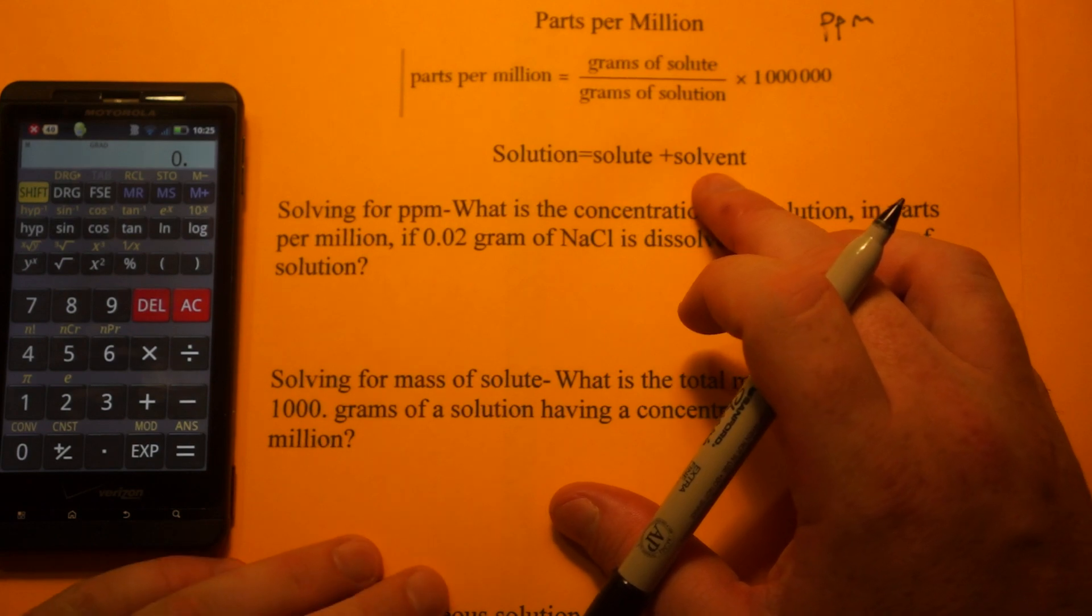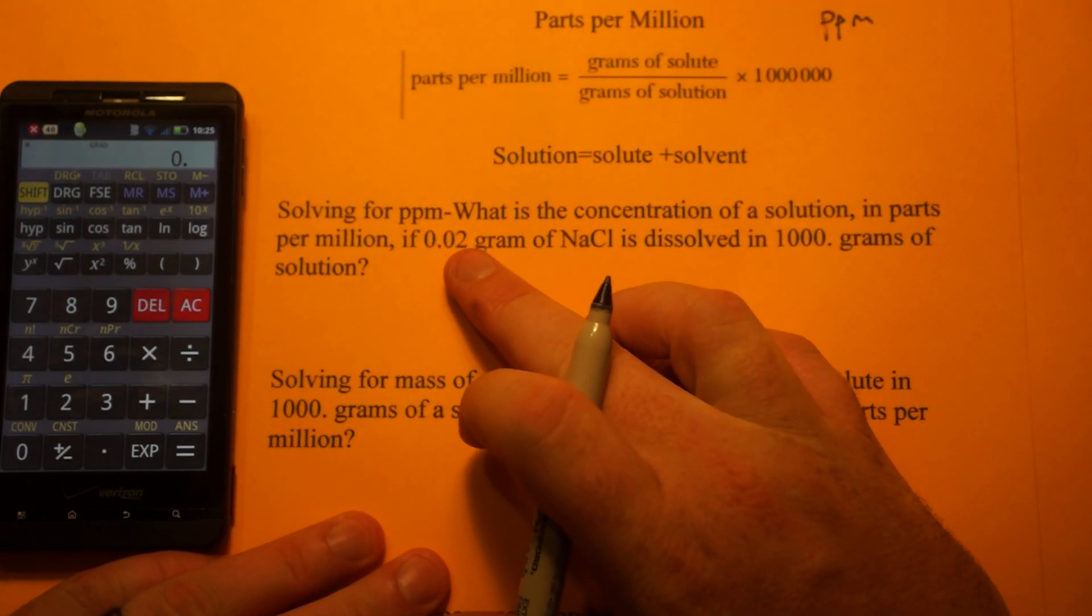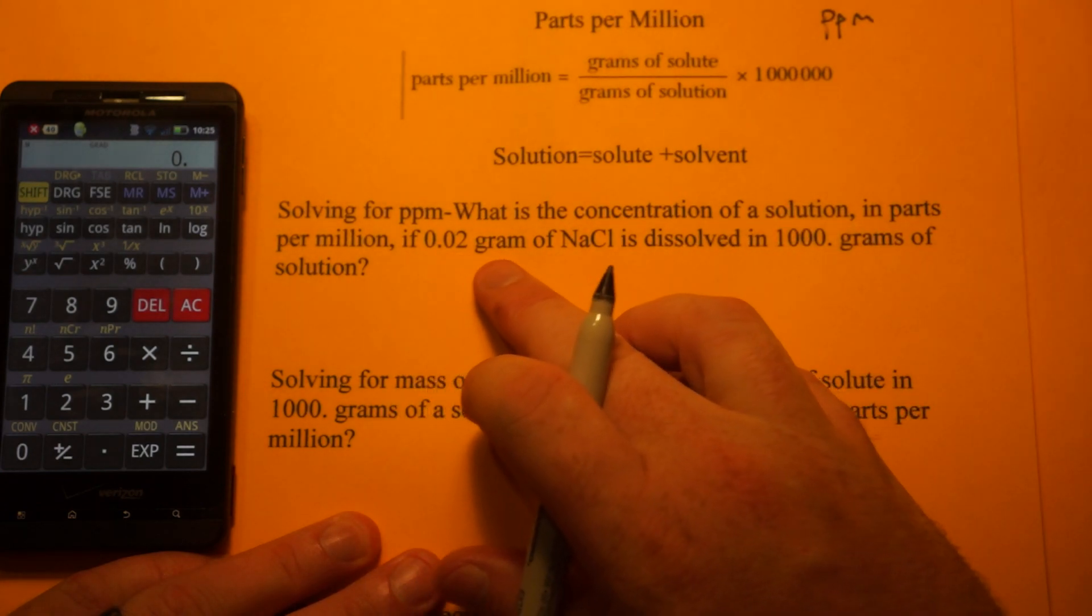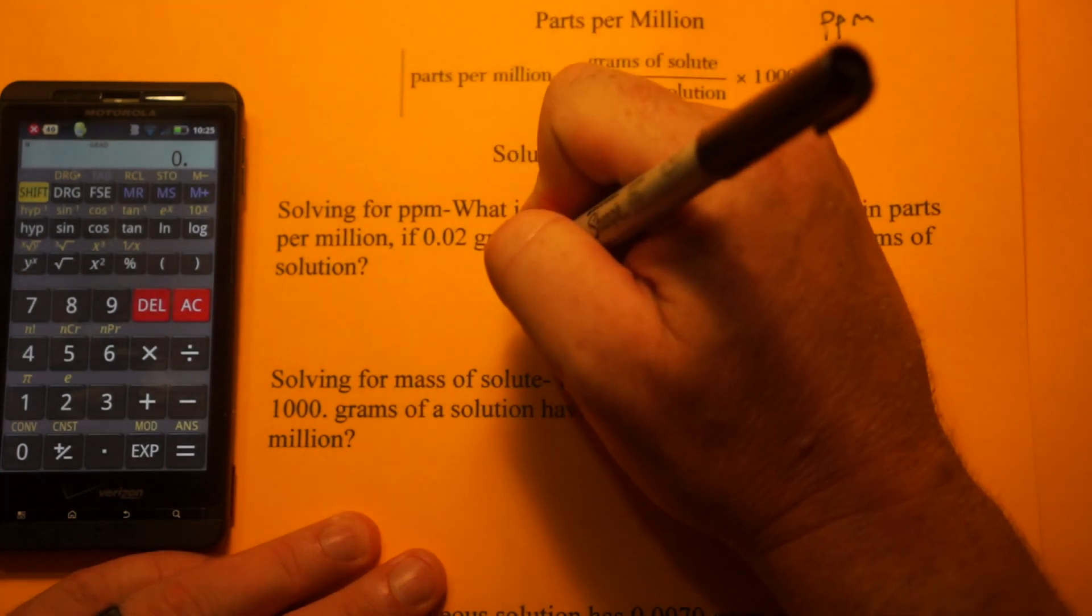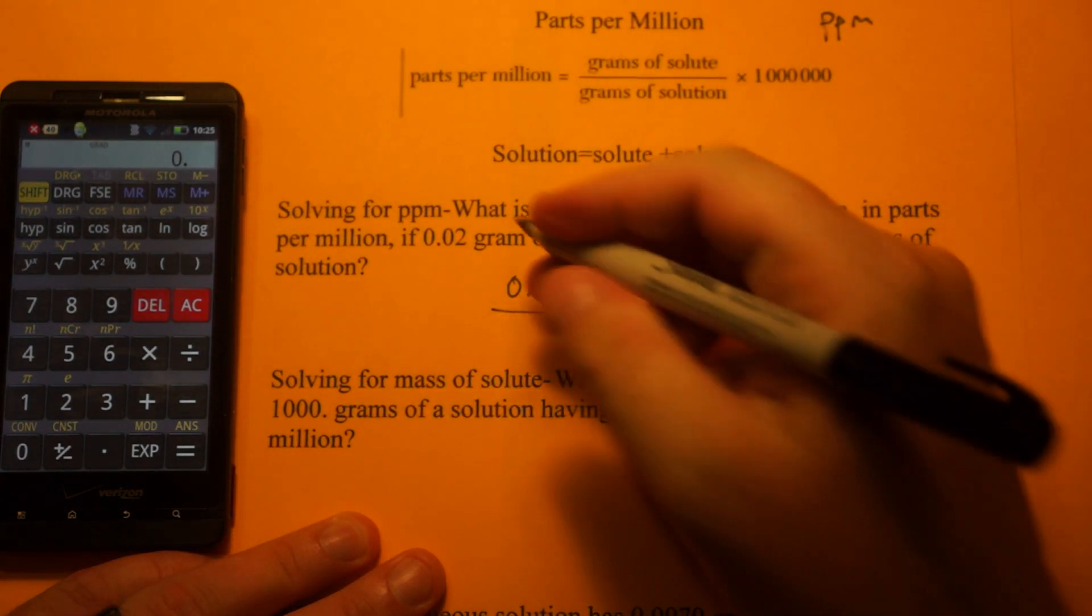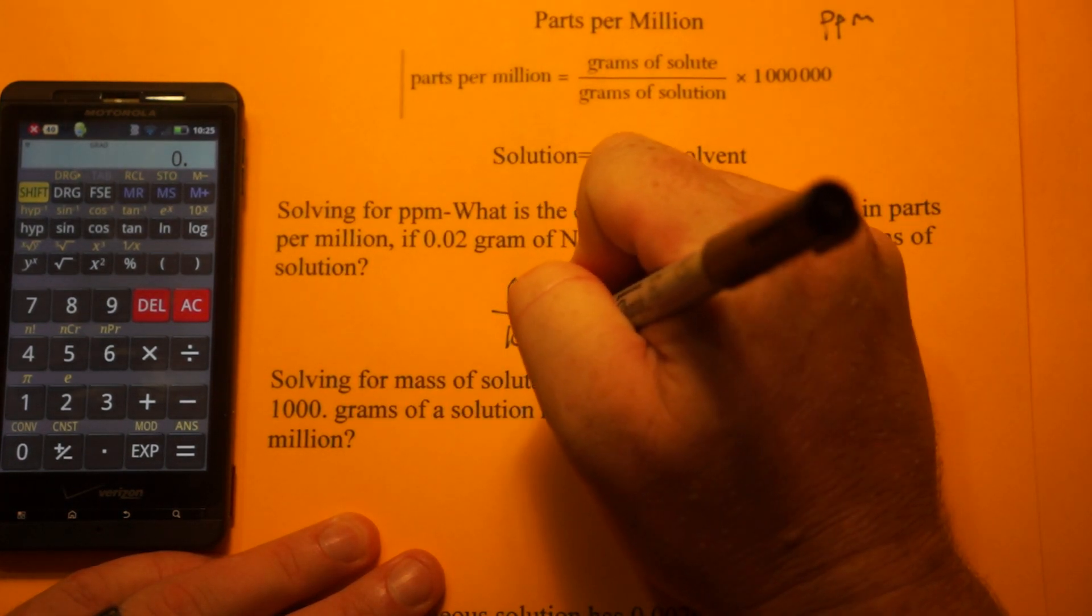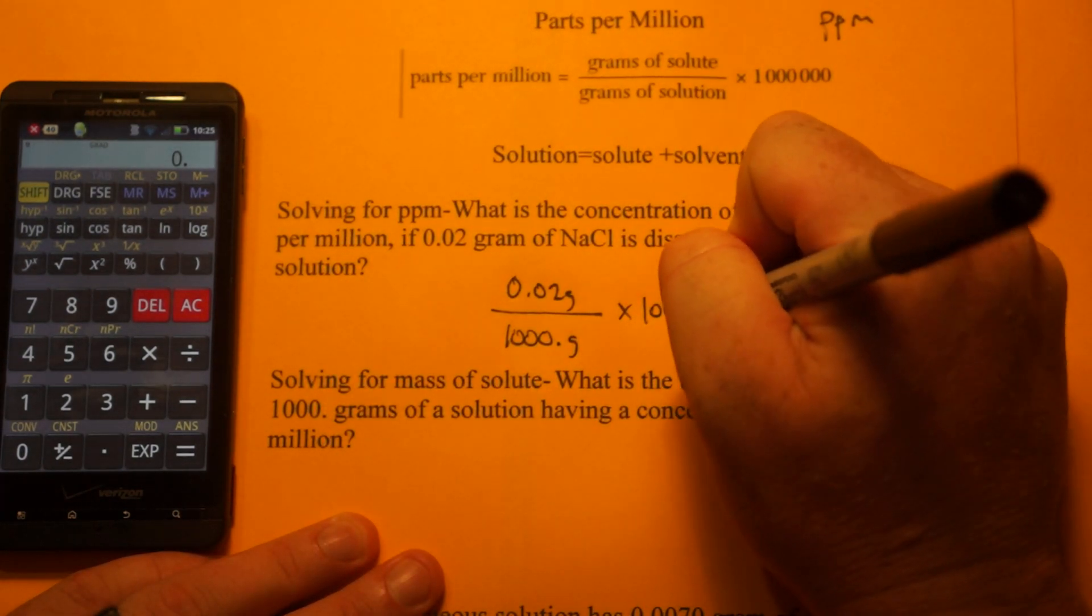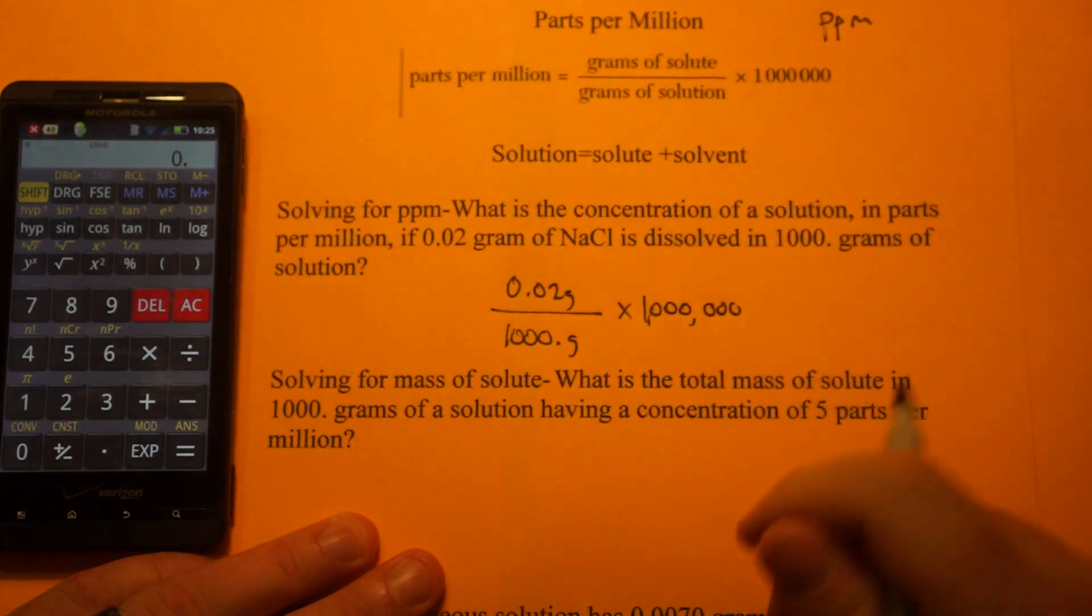So the first problem we're going to do is we're going to solve for parts per million. What's the concentration of the solution in parts per million if we have 0.02 grams of NaCl, so that's grams of solute, 0.02 grams, dissolved in 1,000 grams of solution. So we just times that by a million, and we'll solve for our answer.